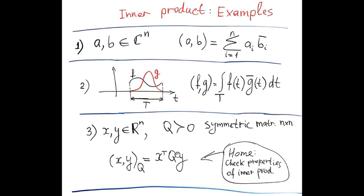The third example. Assume we have two real n-dimensional vectors and a symmetric n-by-n matrix Q, which is positive definite. We define inner product of x, y with index Q as x transpose Q y.